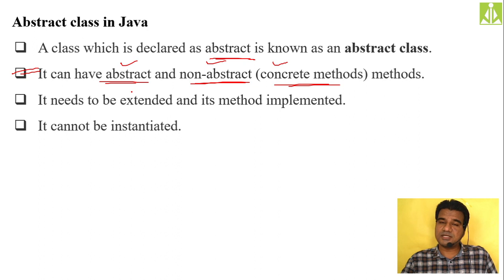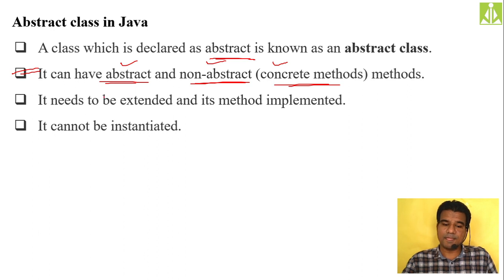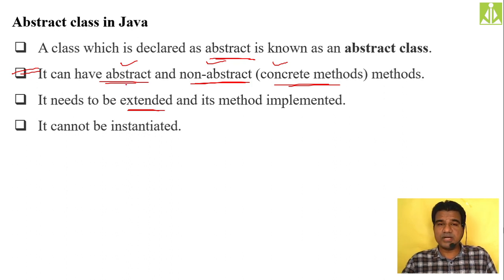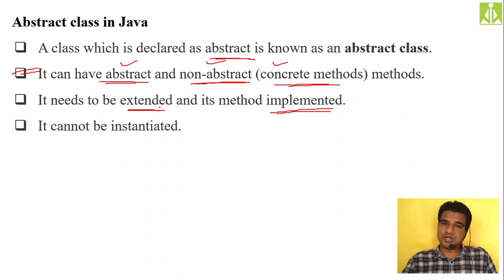When you put abstract methods inside a class, you have to give the implementation of those methods using subclasses. An abstract class needs to be extended, and its methods implemented by the subclass. By extending the abstract class, we provide the implementation of the abstract methods.